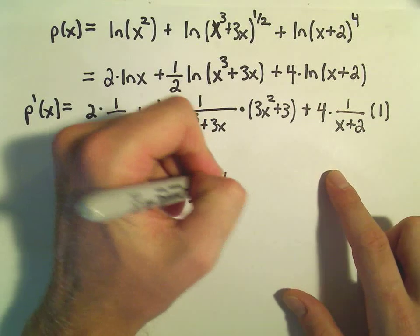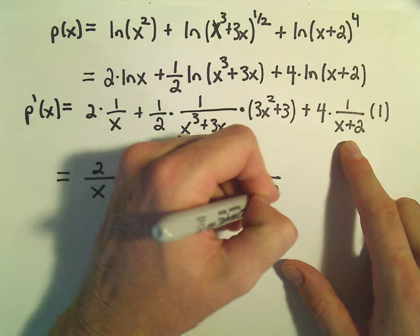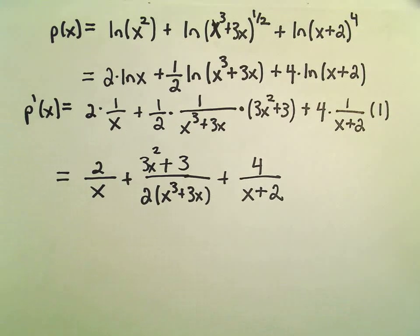And then last but not least, we would have 4 over x plus 2. And there's our derivative.